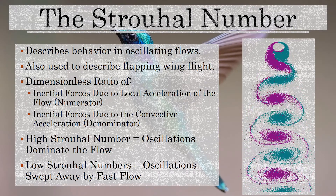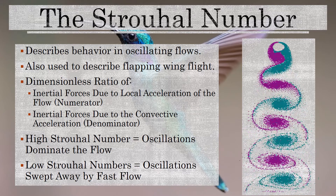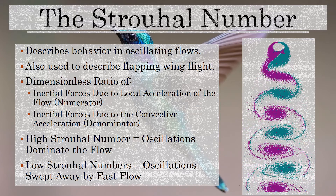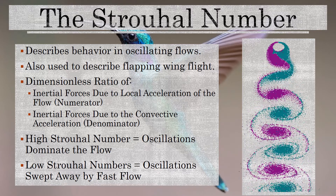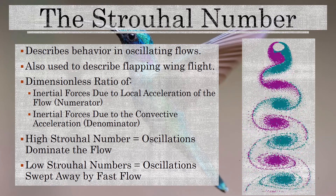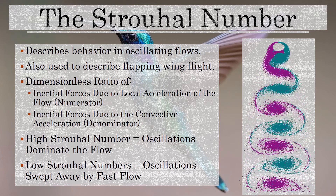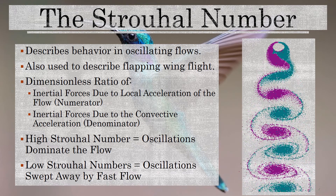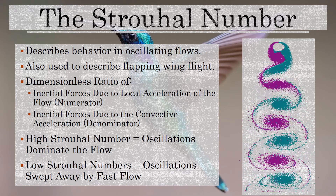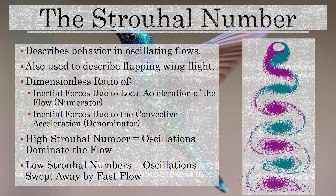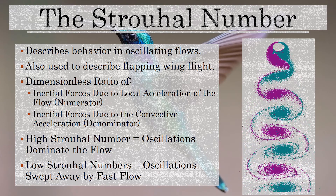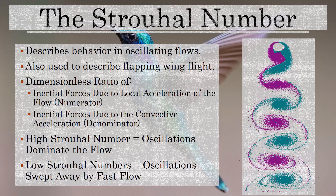The Strouhal number is used to describe both the behavior in oscillating flows as well as flapping wing flight. The idea behind it is to have a ratio of the inertial forces due to the local acceleration of the flow to the inertial forces due to the convective acceleration. A high Strouhal number means the oscillations are dominating the flow, while a low Strouhal number means the oscillations are swept away because the flow is pretty fast. The Strouhal number can describe how big the oscillations get versus how quickly they're swept away.